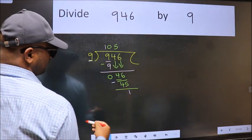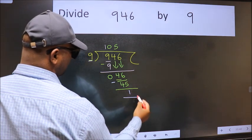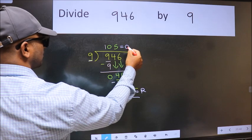We get one. No more numbers to bring down, so we stop here. This is our remainder and this is our quotient.